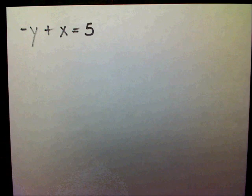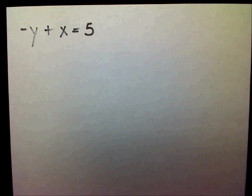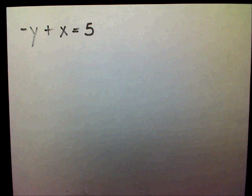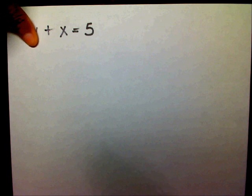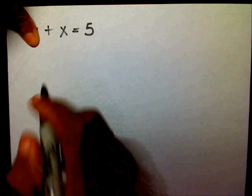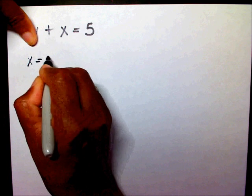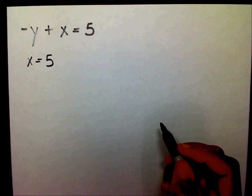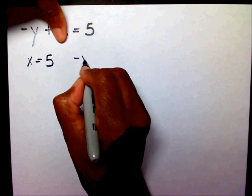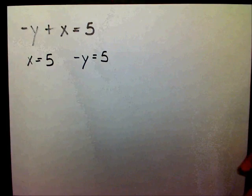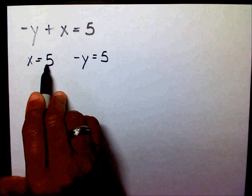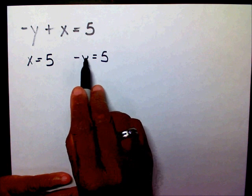Let me let you try one: negative y plus x equals 5. Please try that one. So, I'm going to cover up my y — that's going to leave me with x equals 5. Then I'm going to cover up my x term. My y term still has a negative next to the y, and I need to get rid of that negative.